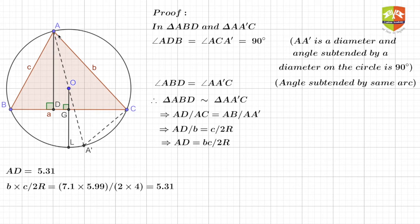Also angle ABD, or rather angle ABC which are the same, will be equal to angle AA'C, right? Because AC being the same chord, it is subtending two angles at point B and A', right?